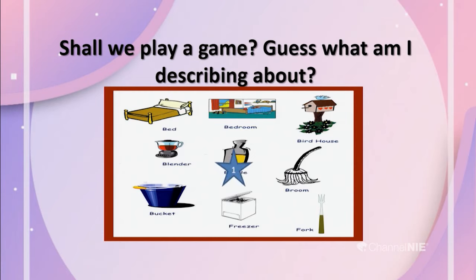Here we go, the next one. We use this — the shape, it is square in shape. And it is made of metal. We use it to store frozen items, so we can keep things for a long time. Any guesses? Yes, I think it is the freezer. Correct! You got that correct. It is the freezer. I hope our children got the correct answer as well.